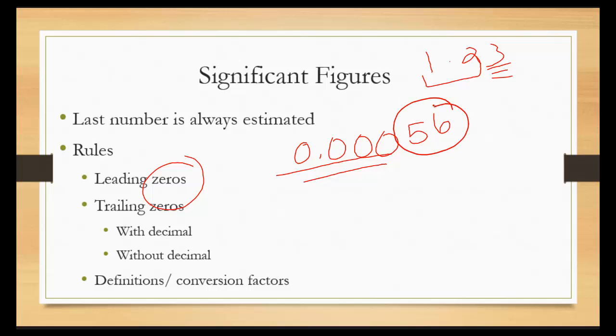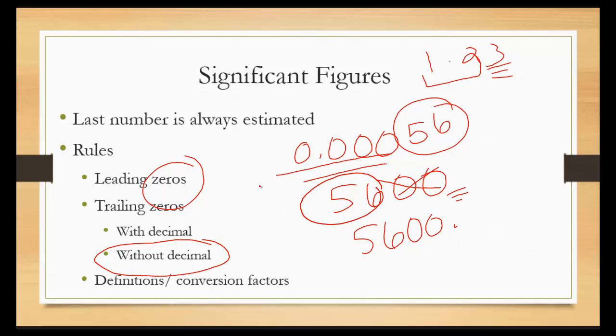Trailing zeros are the ones that give people problems. If you do not see a decimal here, without a decimal, those are not significant. There's only two sig figs here. If you do see a decimal, that means those are significant, which means we have four sig figs here. So with decimal or significant, without a decimal or not significant.